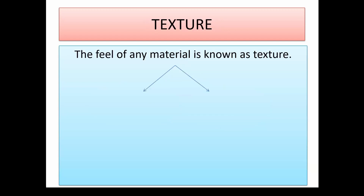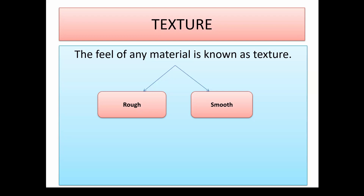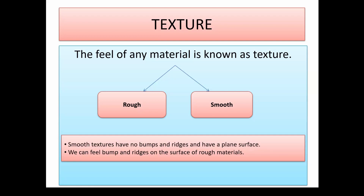The next property is texture. When we feel a material, it could be that there are no ridges or bumps on it. Based on this, materials can be divided as rough or smooth. Smooth surfaces have no bumps or ridges and have a plain surface — for example, silk is a smooth material. The surface of tree bark, an unfinished wall, and sandpaper are all rough materials where we can feel the bumps and ridges.